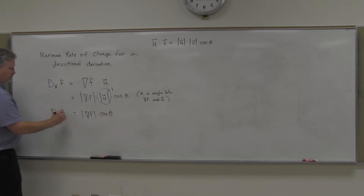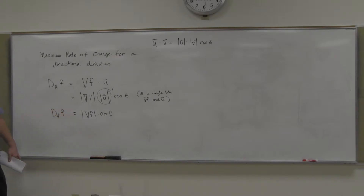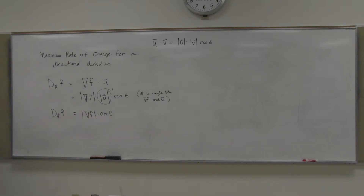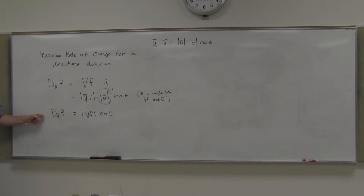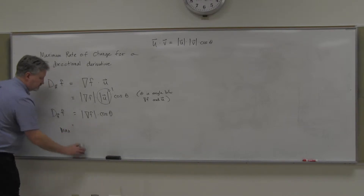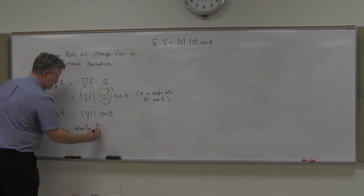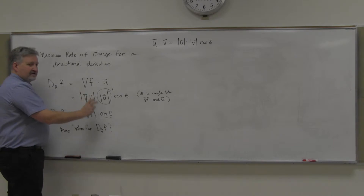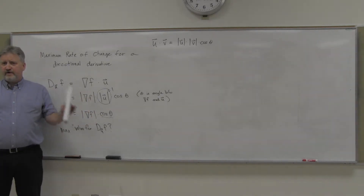So the directional derivative in the direction of unit vector u can also be computed as the magnitude of the gradient of f times cosine of theta. Usually we don't know that angle, so that's not going to be an easier way to compute it. But what it allows us to talk about is: what would be the maximum value we could get out of this directional derivative? It all hinges on cosine of theta. Cosine of theta ranges between negative one and positive one.